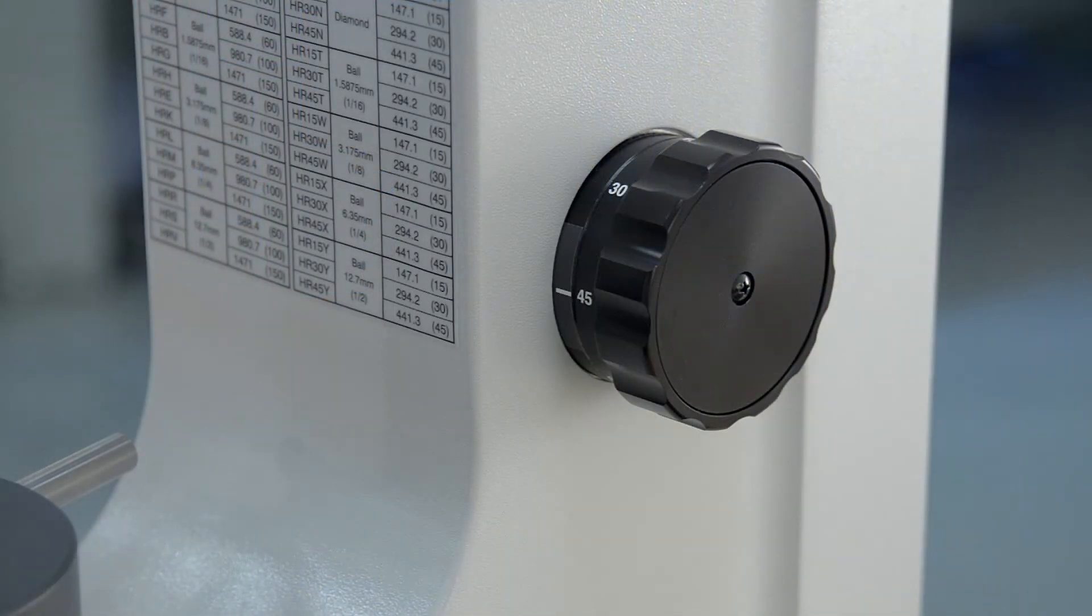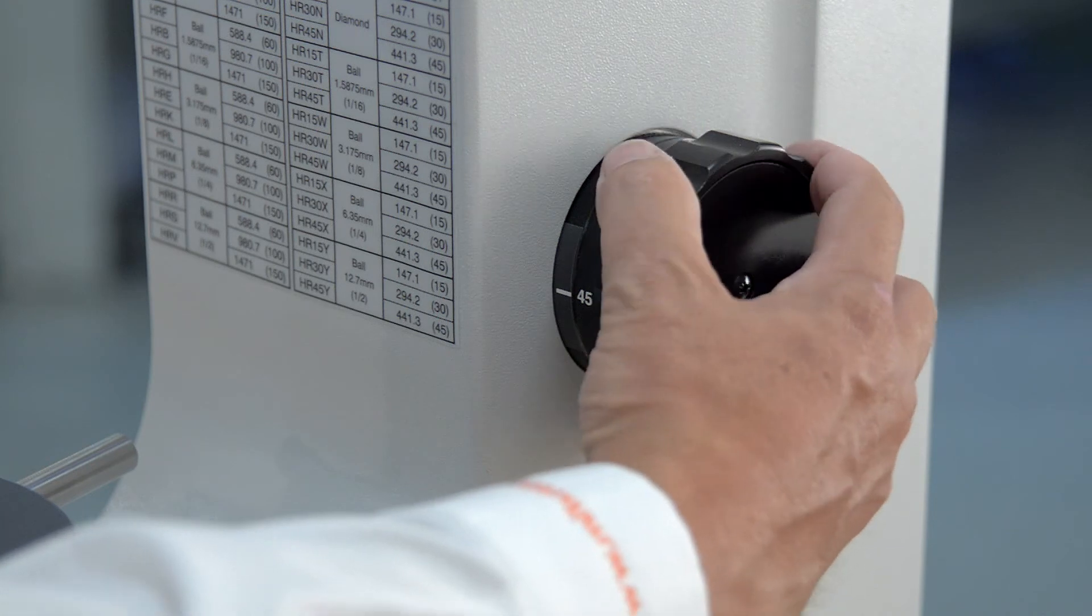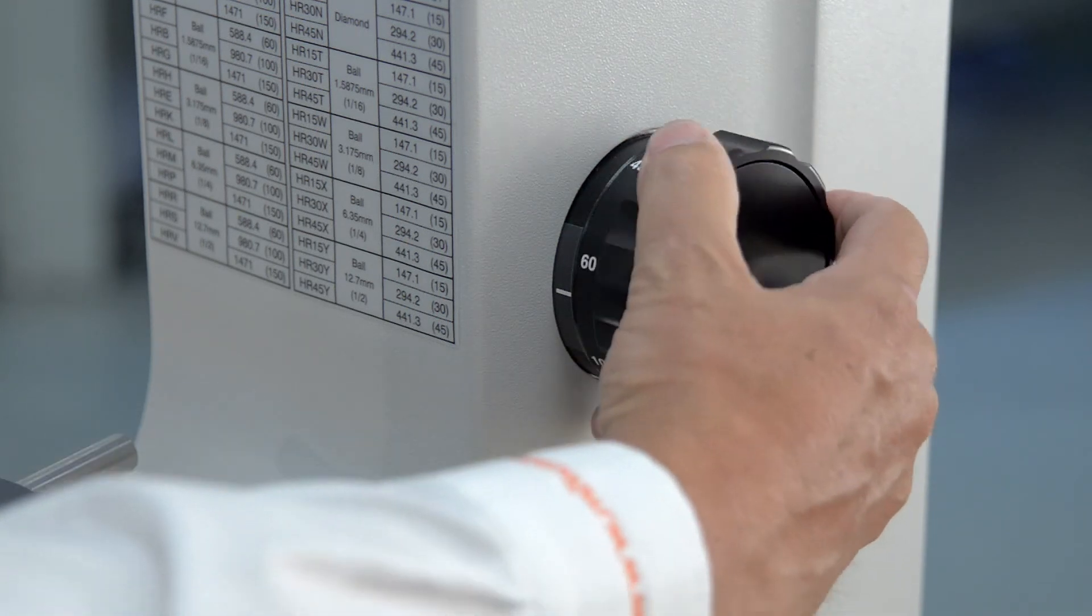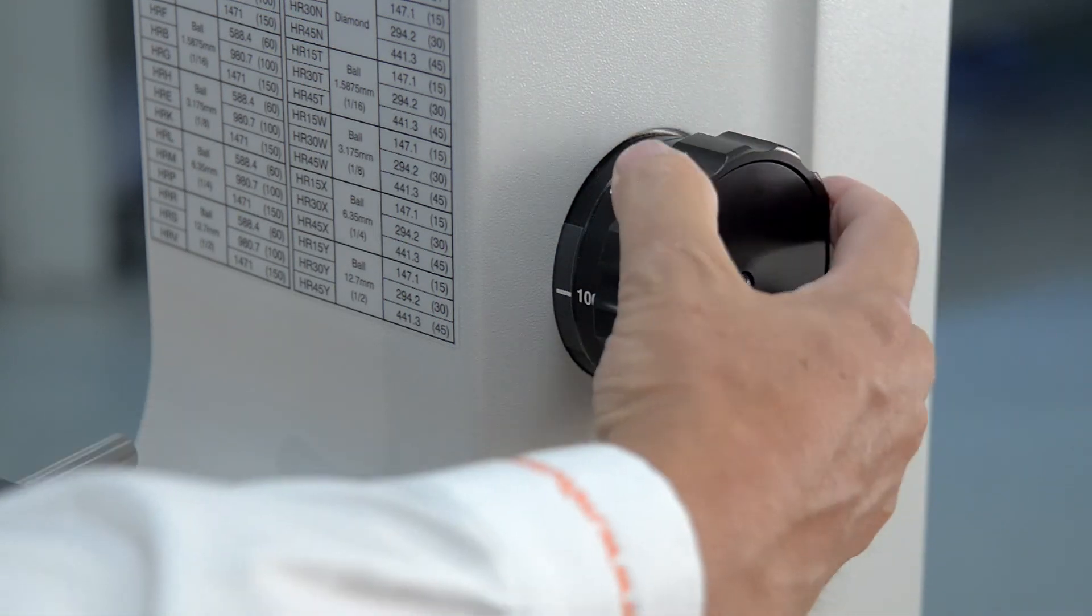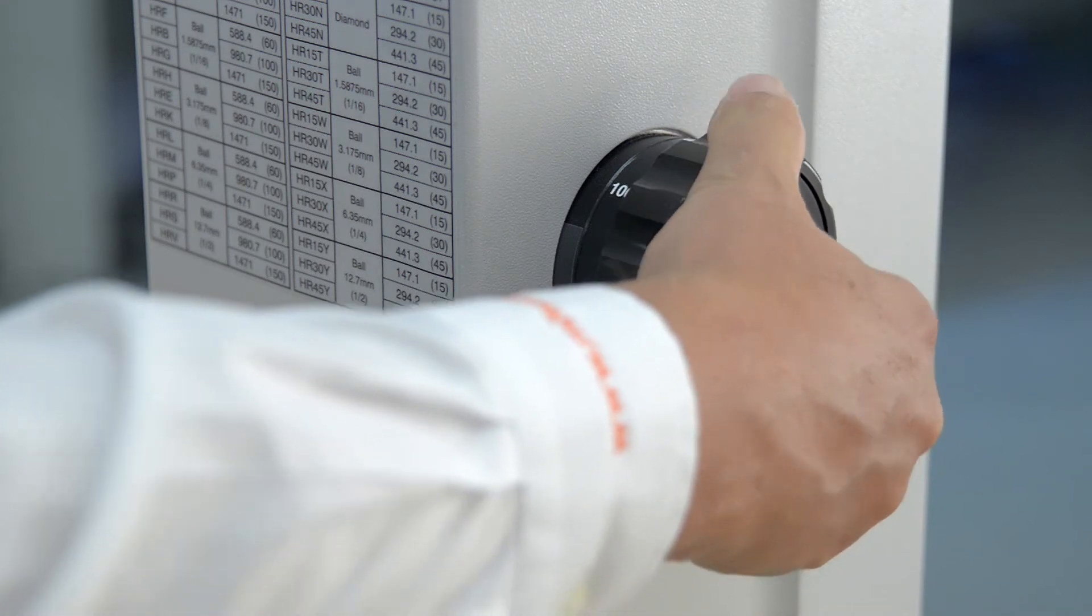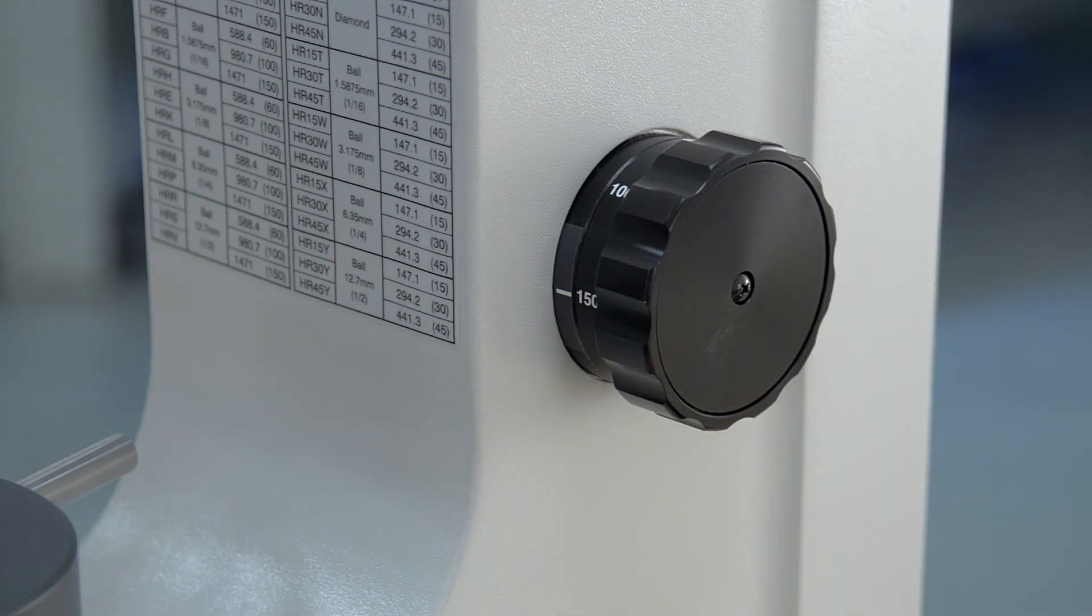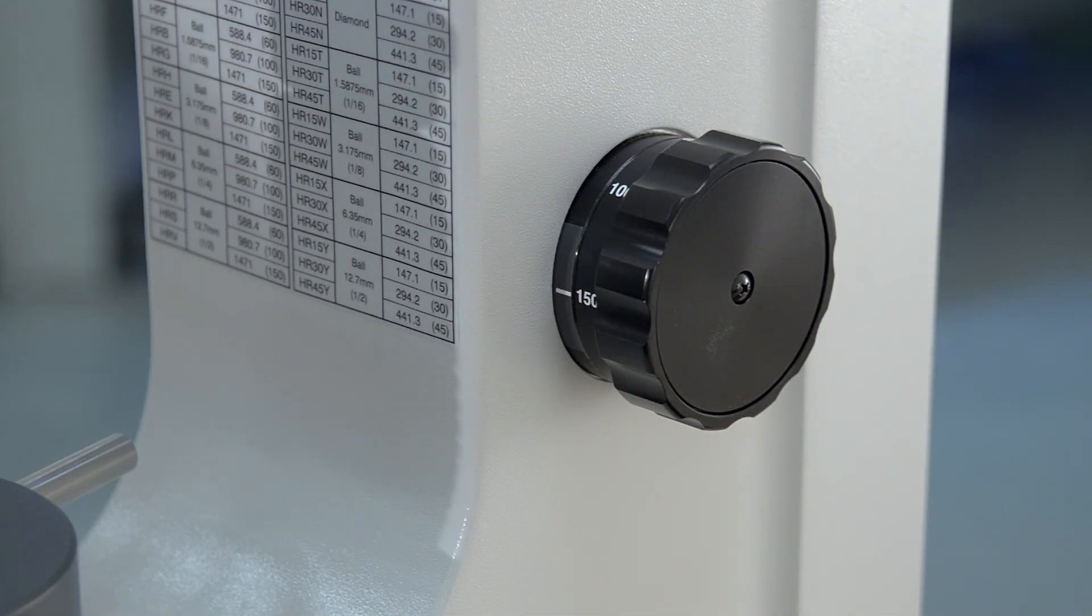The two HR-430 testers are similar to the digital HR-320 model, but the dial-await system allows the testing scales to be changed with much less operator input. Just turn the knob and the test force is set. The automatic brake and test initiation further simplifies the test method.